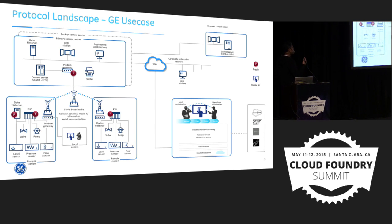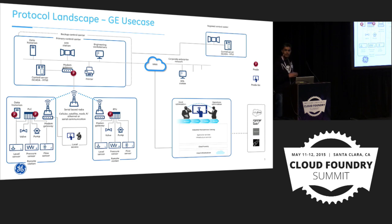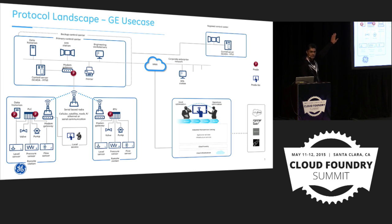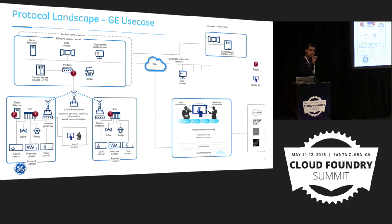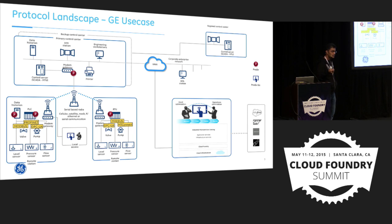The example and use case I'm going to show you today is from our power generation business. This is our typical IoT deployment and topology. On the bottom left are remote stations where big turbines generate electricity. On the top left are control centers that manage these remote stations. In the remote stations, you have PLCs with a PREDICS machine — our embedded software — which talks to the turbines and controls their operations using OT protocols like OPC UA, Modbus, MT Connect, Profinet, and many more.